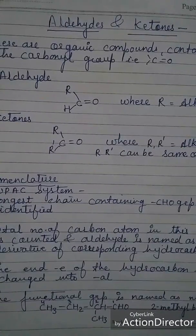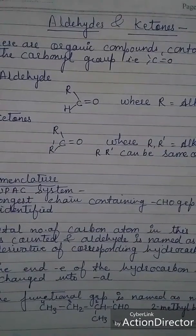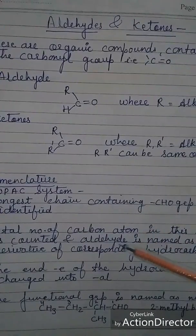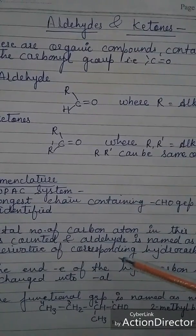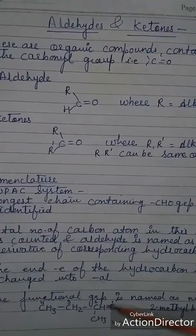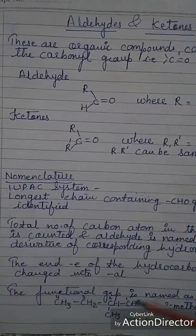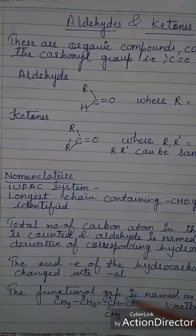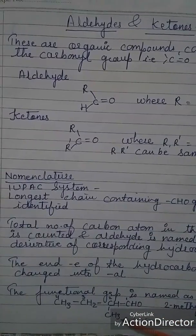Let us talk about the nomenclature. There is the common system and the IUPAC system. In the IUPAC system, the longest chain containing the CHO group is identified for aldehyde, and the total number of carbon atoms in this chain is counted. The aldehyde is named as a derivative of the corresponding hydrocarbon, and the terminal 'e' of the hydrocarbon is replaced by 'al'. For example, with two methyl substituent and four carbons, this will be 2-methylbutanal.